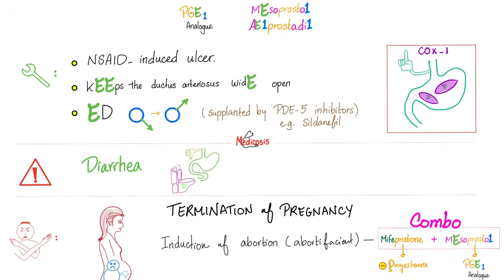Let's talk about prostaglandin E1 analogs — misoprostol and alprostadil. Why do we use them? We use them if you have an NSAID-induced ulcer, because when you inhibit prostaglandin with NSAIDs, you give prostaglandin analogs to counteract this since they are cytoprotective. Prostaglandin E will also keep the ductus arteriosus wide open. They can also help if you have erectile dysfunction. What are the side effects of prostaglandin E1 analogs? Diarrhea. Contraindications? Pregnancy — they cause termination. Prostaglandins are abortifacients.